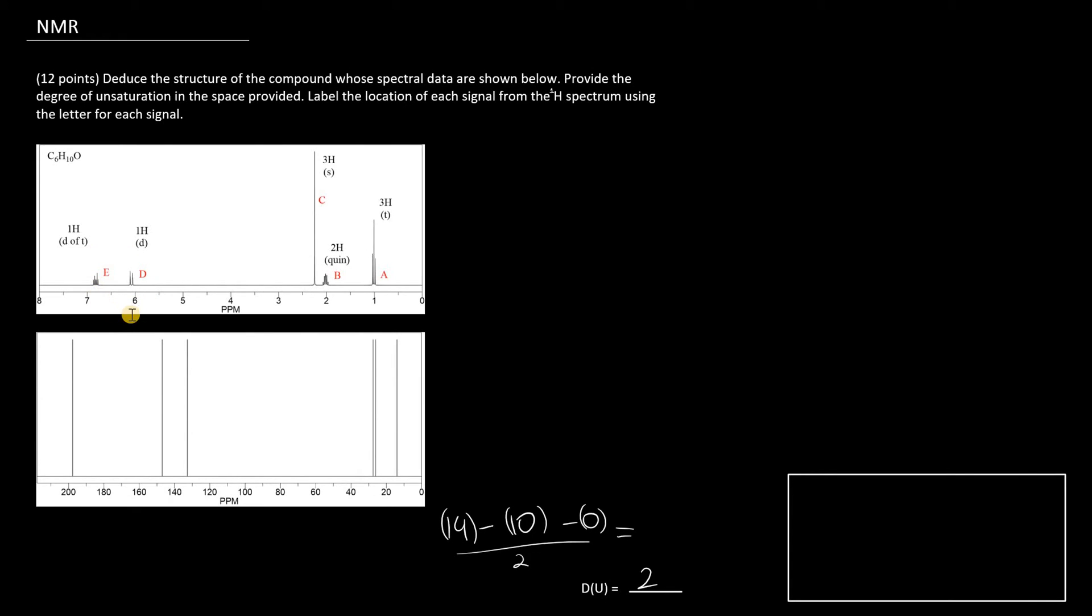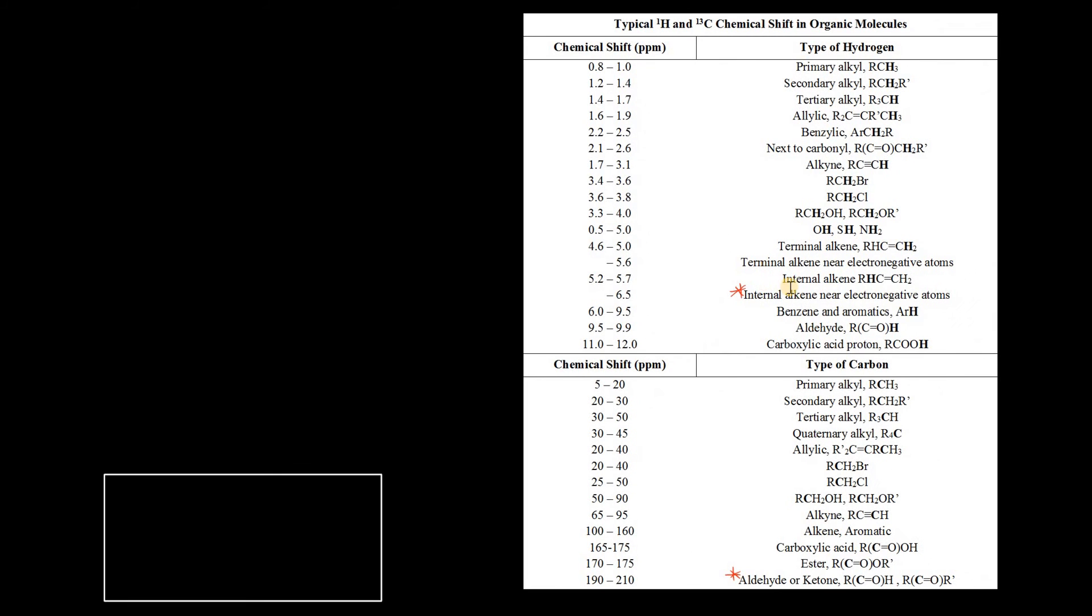This time, the alkene is probably internal because the signals are between 6 and 7 parts per million. We observe that here, internal alkenes have higher chemical shifts between 5.2 to 5.7. But in this case,